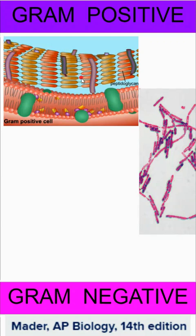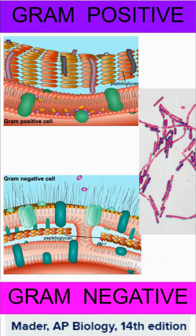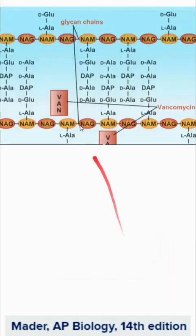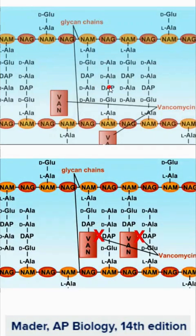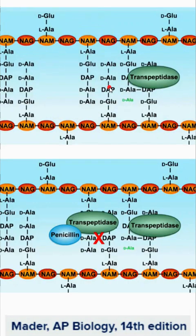Thick layers of peptidoglycan will stain purple, and those will be gram-positive. Gram-negative bacteria have thin layers of peptidoglycan, and most dangerous pathogenic bacteria are going to be gram-negative. When we think about these glycan chains and the peptides that hang off of them, we use antibiotics typically to attack the peptidoglycan — in this case, vancomycin, and in this case, penicillin.